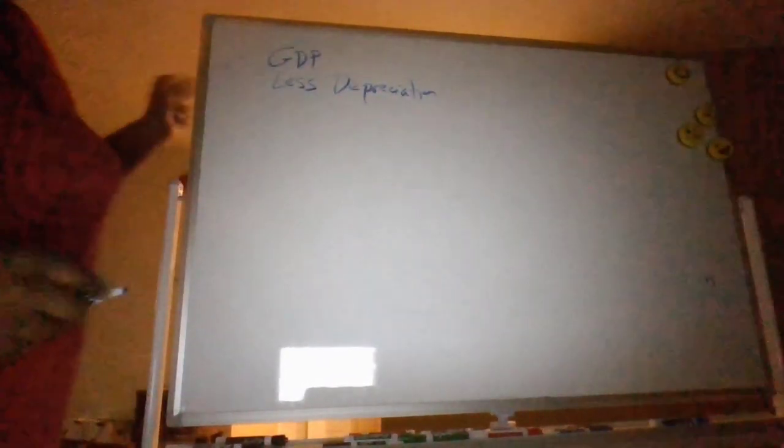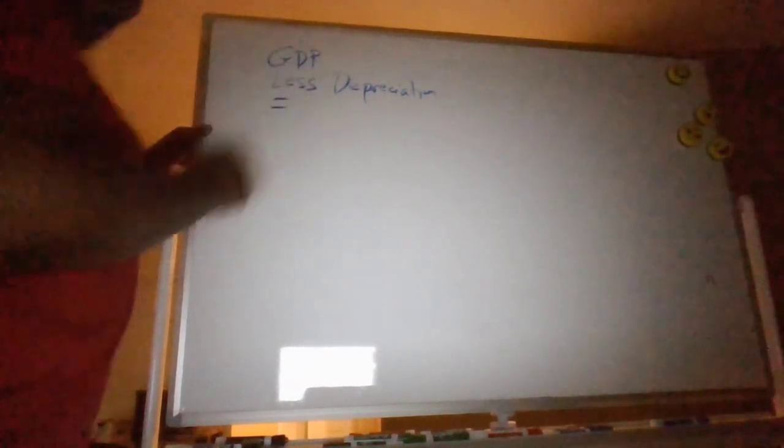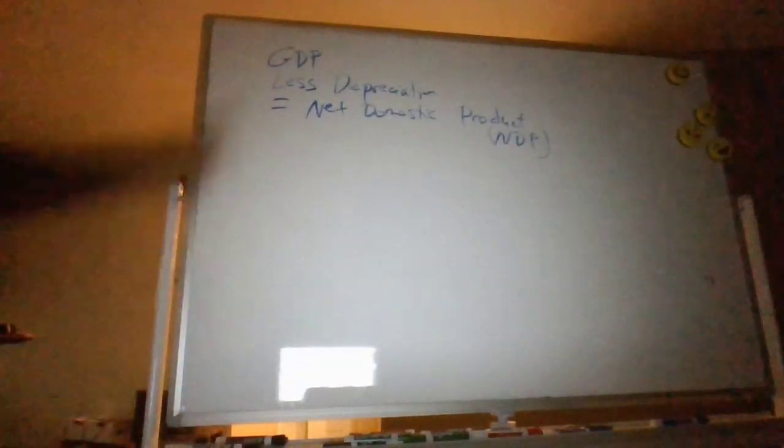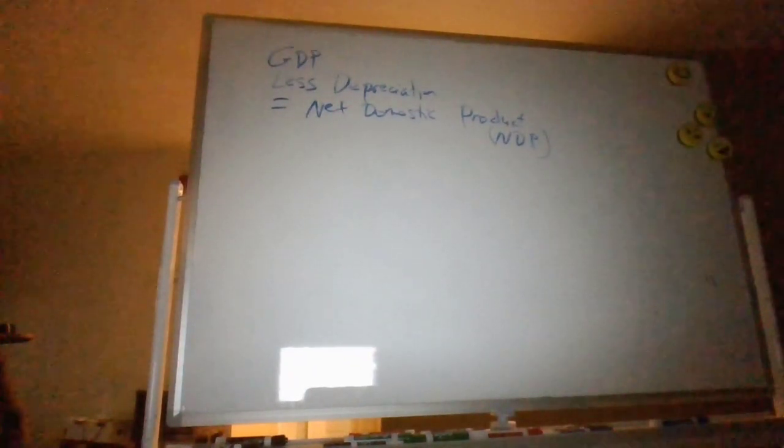There are some other common measures associated with GDP. If you have GDP and you subtract the depreciation — the other name being consumption of fixed capital — you actually get what's called Net Domestic Product, or NDP. So if you take GDP and subtract the consumption of fixed capital, you have NDP.